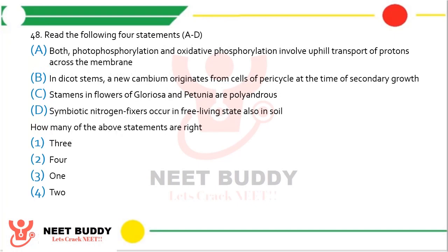Question 48. Read the following 4 statements: (A) Both photophosphorylation and oxidative phosphorylation involve uphill transport of protons across the membrane. (B) In dicot stem, new cambium originates from cells of pericycle at the time of secondary growth. (C) Stamens in flowers of Gloriosa and Petunia are polyandrous. (D) Symbiotic nitrogen fixers occur in free-living state also in soil. How many statements are correct? The correct answer is option 4 — 2 statements of the given 4 are correct.